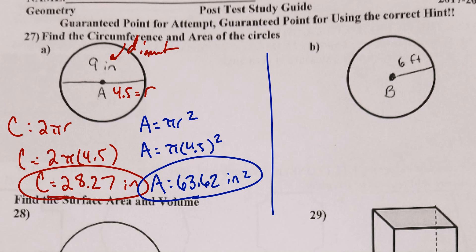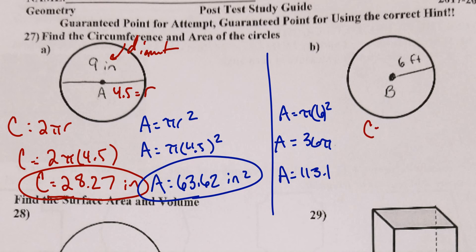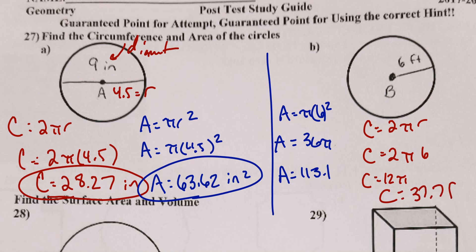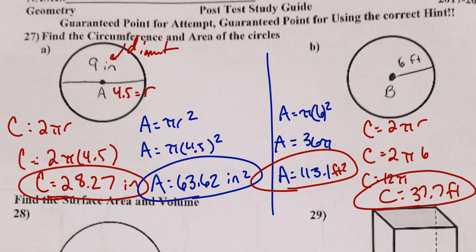Part B is similar — it's in feet. Area = π × 6² = 36π ≈ 113.1 square feet. Circumference = 2π(6) = 12π ≈ 37.7 feet. Don't forget your labels — I forgot my square feet here, so make sure you include them. That's it for number 27.